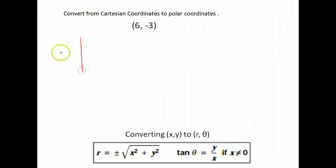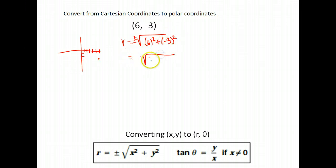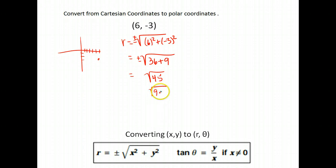Here is another example. Always, even if it's just a little sketch, plot your point so you know what quadrant you need to end up in. So (6, −3) would put me in the fourth quadrant. Then we find r: it's ±√(6² + (−3)²), which gives me 36 + 9, or √45. That simplifies — 45 is 9 × 5, and we can take √9 = 3, while √5 stays. So r is 3√5 or −3√5.